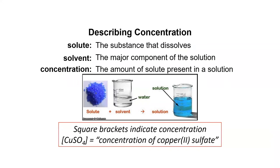When we mix a solute with a solvent, we make a solution. The word concentration includes how much solute is in the solution. We use square brackets around a substance to indicate concentration of that substance.